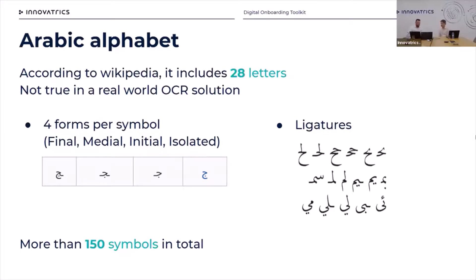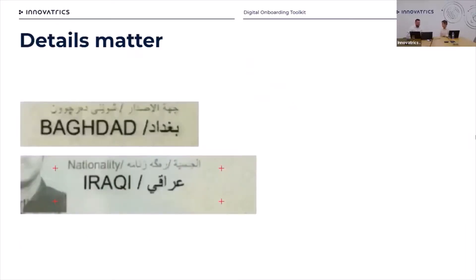Then another thing — and I've mentioned already ligatures — these are like extra symbols that you will not find in the 28-letter alphabet, but we still have to recognize them. So in total we did the count, and in our system, in a typical document, we recognize more than 150 different symbols.